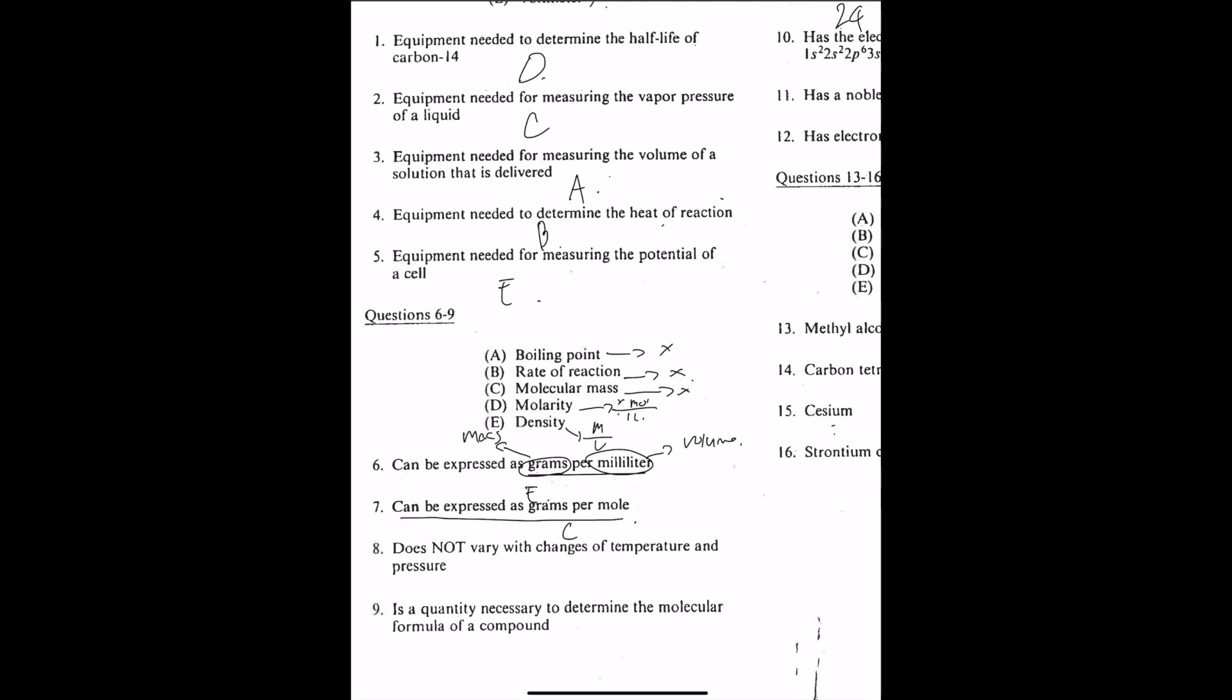Does not vary with changes of temperature and pressure. Boiling point obviously does vary with temperature and pressure because as you have lower pressure, your boiling point will decrease, and as you have higher pressure, your boiling point will increase. It's definitely not molarity because remember, molarity is x moles over 1 liter, and if the pressure and the temperature is changed, then the volume would change as well. It's not density either because the volume can be changed by temperature and pressure. So the answer will be C, molecular mass.